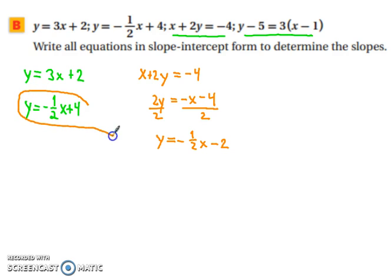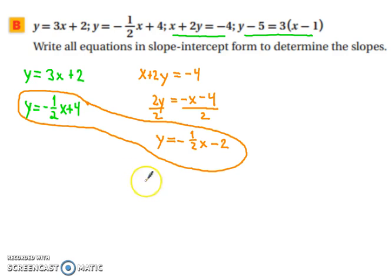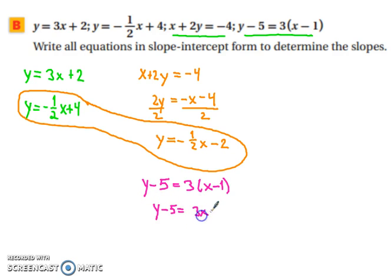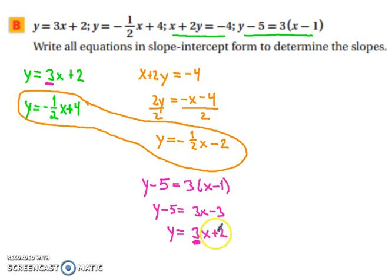We can see that y = −(1/2)x + 4 and x + 2y = −4 are parallel. For the last equation, y − 5 = 3(x − 1), we distribute to get y − 5 = 3x − 3, then add 5 to both sides giving y = 3x + 2. Notice this is the same as the first equation — they coincide, so they are not parallel to each other. Our only parallel pair is y = −(1/2)x + 4 and x + 2y = −4.